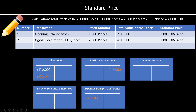Let's now assume that we receive the goods — however, not for a price of 2 euro per piece, but for a price of 3 euro per piece, due to any reason. This means that our stock amount increases from 1,000 pieces to 2,000 pieces, as we received additionally 1,000 pieces. The total value of the stock is calculated as follows: we had 1,000 pieces before, and now we purchase 1,000 more pieces. Those 2,000 pieces are always valuated with the standard price, which is 2 euro — a constant price that does not change. In the end, this makes 4,000 euro of total stock value.